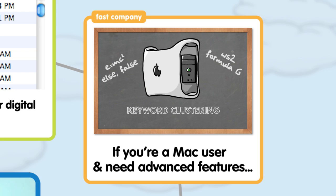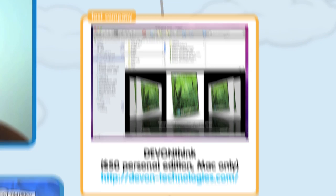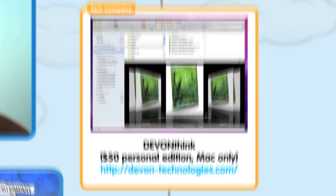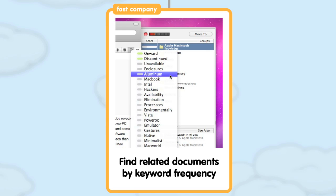If you're a Mac user and you need advanced features like keyword clustering and semantic document relationships, you want DEVONthink. I used DEVONthink to organize all my notes and research while I was writing my book, and it was worth every penny of the $50 the personal edition costs.